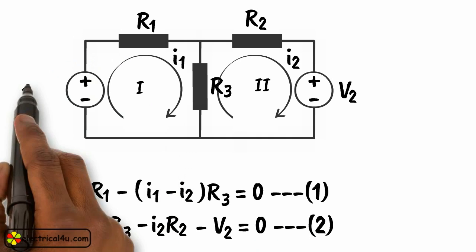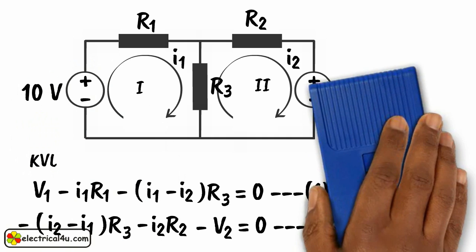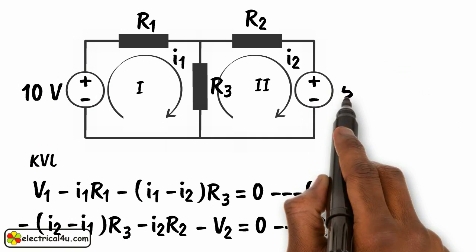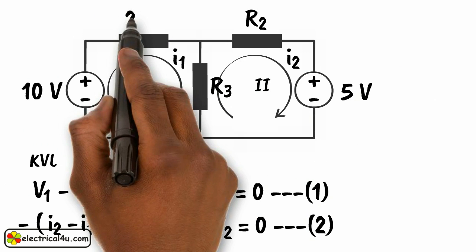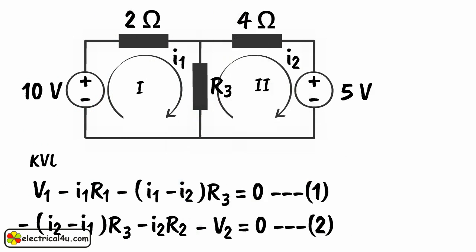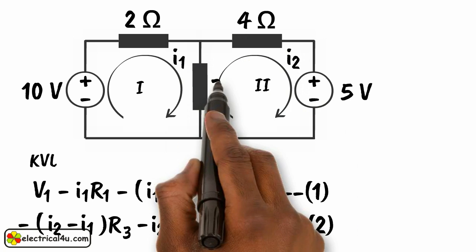Let us consider the value of V1 as 10V, V2 is 5V, R1 is 2 ohm, R2 is 4 ohm, and R3 is 3 ohm.